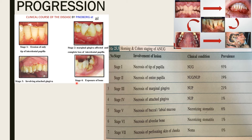The progression described by Horning and Cohen is divided into seven stages. Stage 1 is necrosis of the tip of the papilla; Stage 2 is necrosis of the entire papilla (this is NUG/NUP); Stage 3 is necrosis of the marginal gingiva, also classified as NUP.